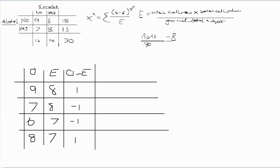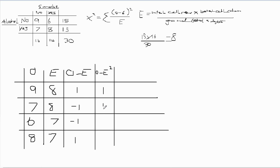Next, we square the O minus E values. We add an (O minus E) squared column. One squared is 1, negative one squared is 1, negative one squared is 1, and one squared is 1 — so all four cells equal 1.